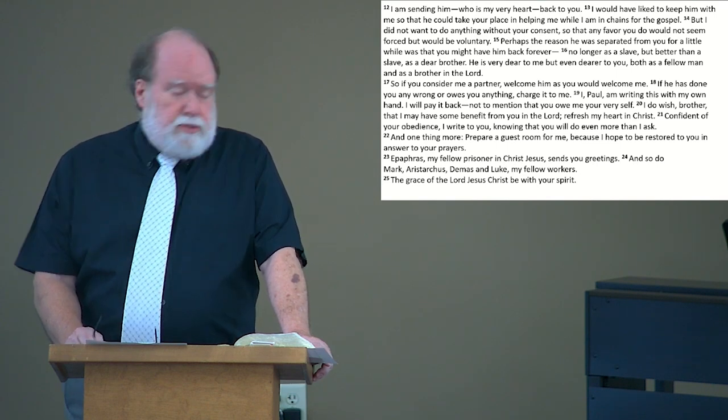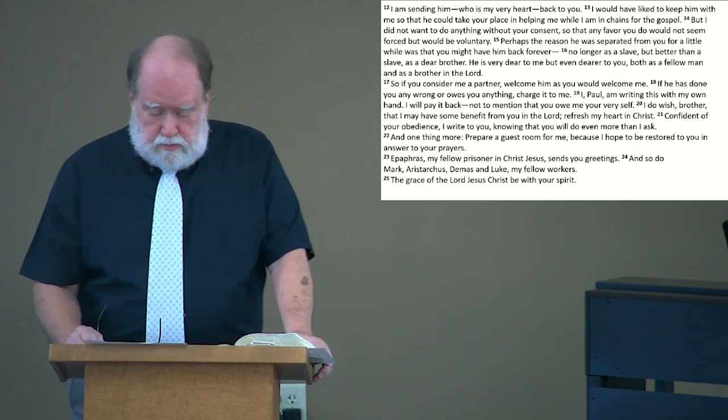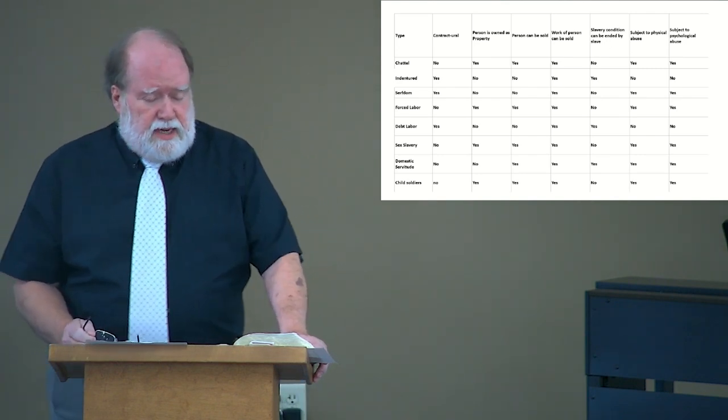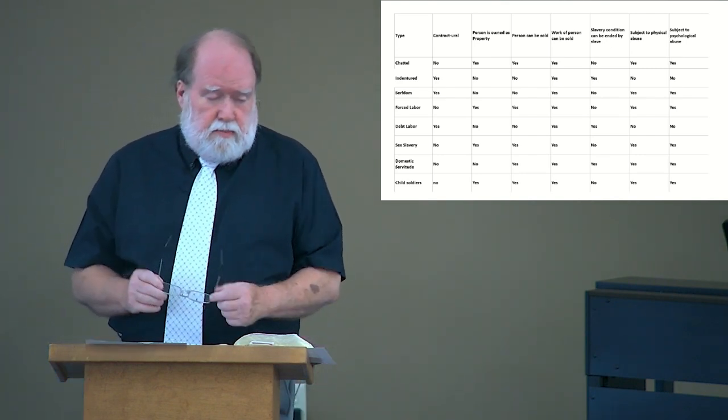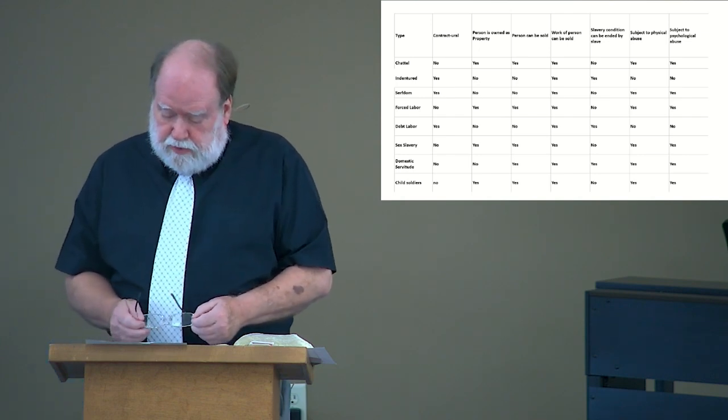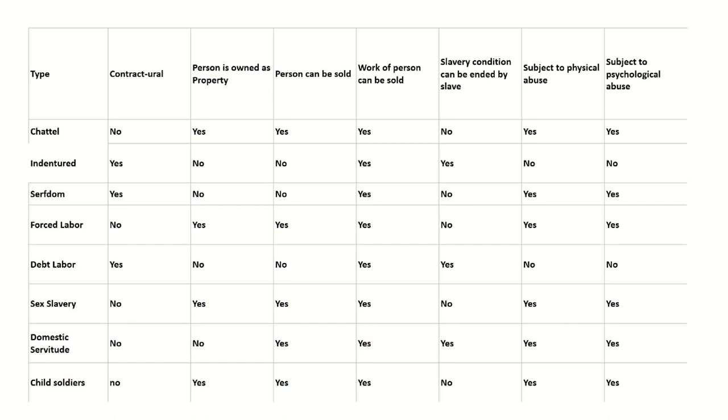Paul is in Rome. It's a city that has over 600,000 slaves, 30% of the population of Rome. There are different types of slaves, but slaves nevertheless. If you look up here, you'll see a whole list of slaves, different kinds of slaves, and what can happen to them.